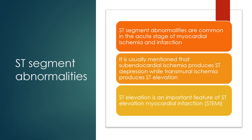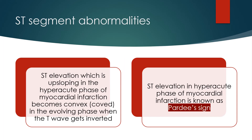ST segment abnormalities are common in the acute stage of myocardial ischemia and infarction. It is usually noted that subendocardial ischemia produces ST depression while transmural ischemia produces ST elevation. ST elevation is an important feature of ST elevation myocardial infarction or STEMI. ST elevation which is upsloping in the hyperacute phase of myocardial infarction becomes convex in the evolving phase when the T wave gets inverted.